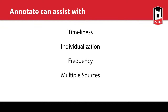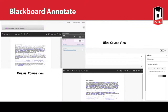Annotate is available in both views. Blackboard Annotate is available in both the original course view and the ultra course view. The grading panel in both is on the right — that's really the only difference you'll see. The actual annotate space itself, where you see the document, is the same in both views. It operates the same no matter what view you're in. Excellent question.